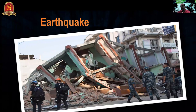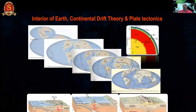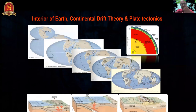Among all disasters, earthquake is one of the most important for us because India is a country where we have major earthquakes in the Himalayan belts, particularly in northeast India. We have two theories in earthquake science — one is interplate earthquakes, the other is intraplate earthquakes — and we have the continental drift theory and the plate tectonic theory.